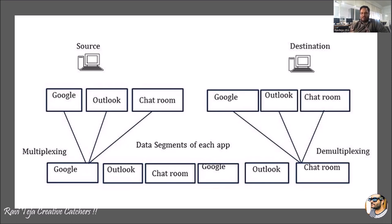Once that single combined signal reaches the destination, it is demultiplexed based on segment port numbers and IP addresses. Whatever message comes from Google at the source goes to Google at the destination; data from Outlook goes to Outlook at the destination; and data from the chatroom at the source goes to the chatroom at the destination. The data should not get interchanged. This separation of each app's data is achieved with the help of multiplexing and demultiplexing.